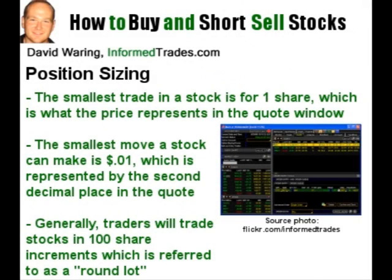So let's get started. As we learned about in our first module, a stock is basically part ownership in a company, which is why people often refer to stocks as shares. The smallest trade that can be made in a particular stock is for one share, which is what the price represents in the quote window that we covered in our last lesson. Similarly, the smallest move a stock can make is one penny per share, as represented by the second decimal place in the stock quote.